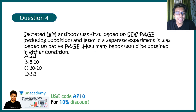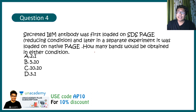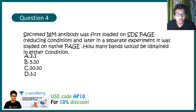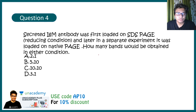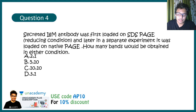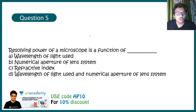Question four: A secreted IgM antibody is first loaded on SDS-PAGE under reducing conditions, and separately on native PAGE. How many bands would be observed? IgM is a pentameric structure. On SDS-PAGE you would get two bands — one for the heavy chains and one for the light chains. On native PAGE you would get one band.